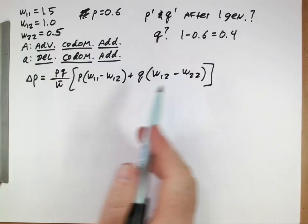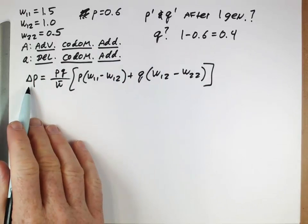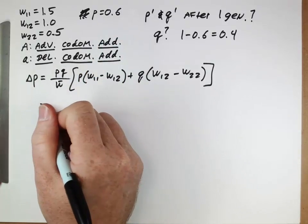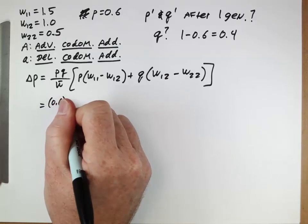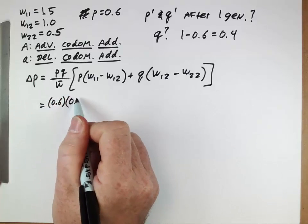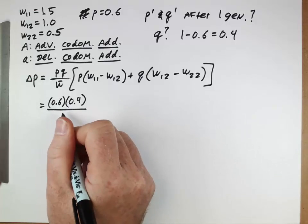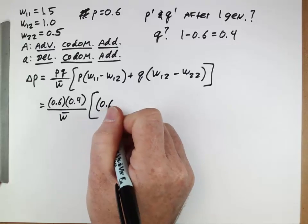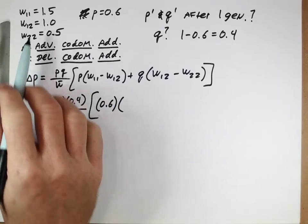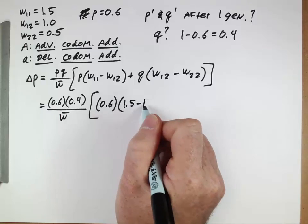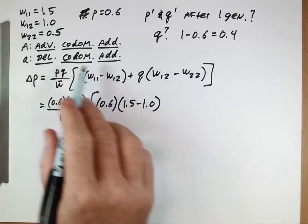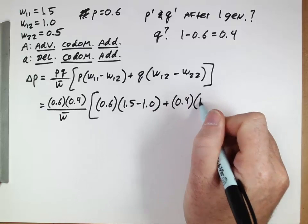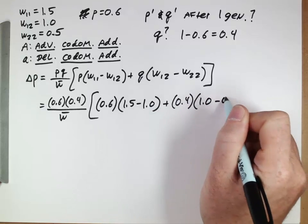That's given by pq over w̄ times p(w11-w12) plus q(w12-w22). That's our starter equation. And now we can actually just plug these numbers in and we'll be able to get an actual numerical value for delta p that will tell us how this changes. So we could plug in 0.6 for p, 0.4 for q, come back to w̄ in a second. p is 0.6, w11 is 1.5, minus 1.0, that's w12, plus q, w12, 1.0, minus w22.